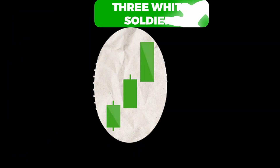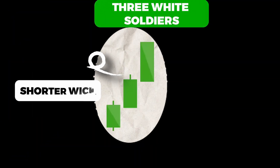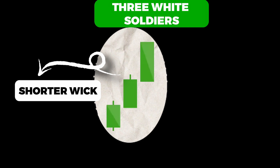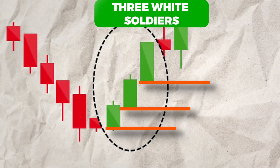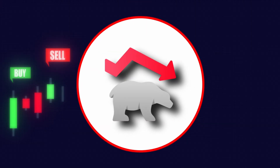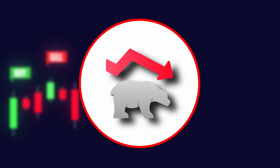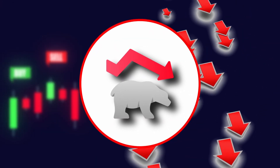Three white soldiers is characterized by three consecutive long green candles with short wicks. Each candle opens and closes higher than the previous one, indicating a strong bullish trend. Next up are the bearish patterns, which suggest a potential downward movement in price.